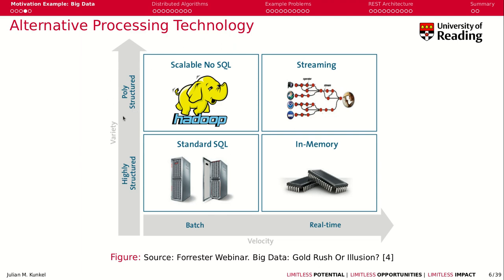On the y-axis we have poorly structured data, like JSON documents, and arbitrary kinds of data that you may want to dump in a data lake. Here we have three additional solutions. First, for real-time processing you often use in-memory solutions — you load all the data into main memory across many servers and process it quickly because there's no IO. On the batch processing side, we have Hadoop, a scalable NoSQL solution we'll discuss next week. And lastly, for real-time with poorly structured data, there's streaming, where data from different sources is processed in a directed acyclic graph — we will look at this in two weeks.